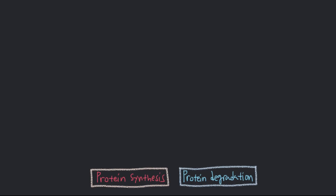Muscle mass is determined through a balance between protein synthesis and protein degradation. When the rate of protein synthesis exceeds the rate of protein degradation — when your muscle cells make more proteins than they break down — they increase in size, resulting in what's called muscle hypertrophy.